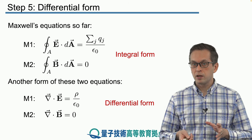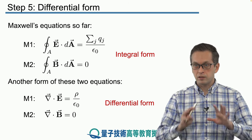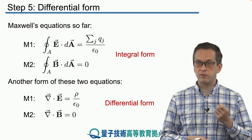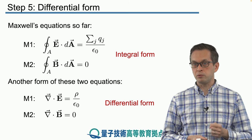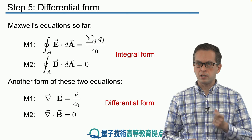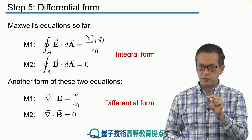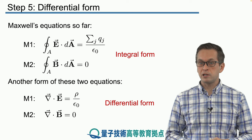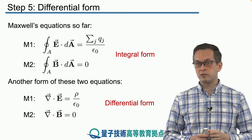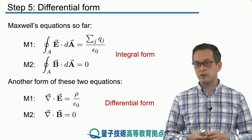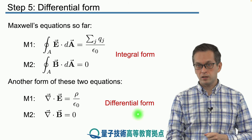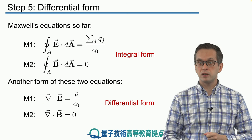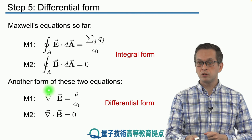The integral form gives you a global picture of what's going on — it considers a finite surface and asks what the flux of the electric or magnetic field is through that surface. The differential form gives a different picture: it looks at a particular point, not a surface, and tells you what the magnetic or electric field must satisfy. These are laws that must be satisfied for every electric field and every magnetic field. Let's see how we can go from the integral form to the differential form.